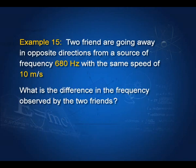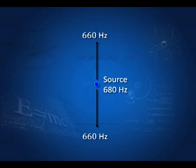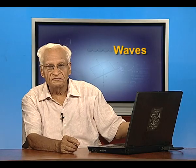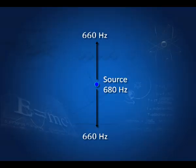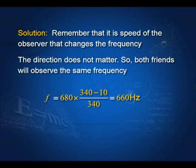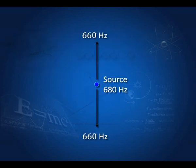Two friends move in opposite directions away from a source of 680 Hz, each at 10 m/s. In the Doppler formula, only the magnitude of the observer's velocity matters, not the direction. Since both friends move away at the same speed, both hear the same frequency: 680 times (340 minus 10) by 340 = 660 Hz.